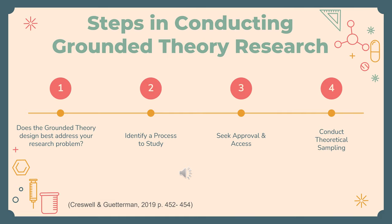While reflecting on the systematic design of grounded theory research, it can consist of eight identifiable steps which Creswell and Cetterman identify. Step 1: Deciding if a grounded theory design can best address your research problem. A grounded theory design is most appropriate when you are looking to develop or modify a theory, explain a process, and develop a general abstraction of the interaction and action of people. Grounded theory focuses more on qualitative research, while most suitable for sensitive topics or situations in which individuals' privacy needs to be protected.